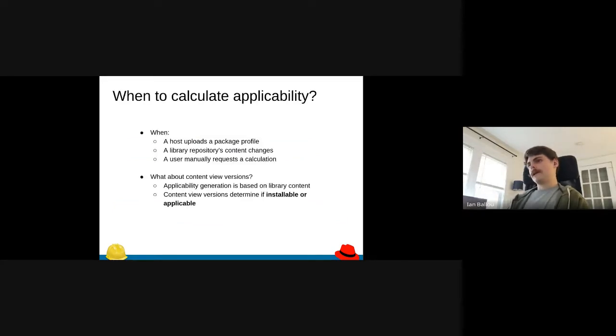This kind of gets us to how we started to think about designing this new Katello applicability. With the background info in mind, when do we need to calculate the applicability for hosts? Firstly, a host when it uploads a new package profile, and that's when you do essentially anything with yum. Often the case would be installing or removing an RPM or doing a yum update. The host will upload a new package profile and then that host will need its applicability regenerated because something changed.